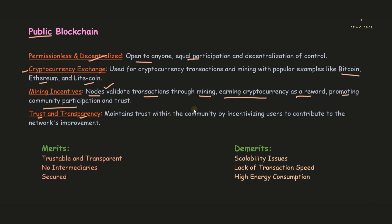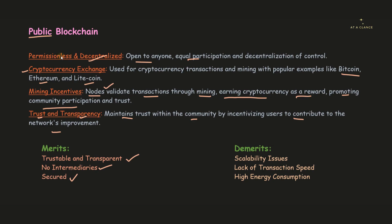Public blockchain is well known for trust and transparency because every transaction is publicly available, though identities are not revealed. Every user has the privilege to contribute to the network's improvement. As merits: it is trustable and transparent, there is no intermediary or central authority, and it is highly secure because millions of nodes participate, each validating transactions, creating more security and trust.